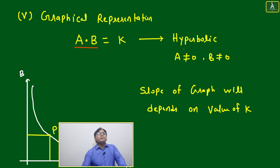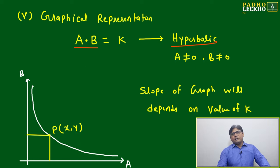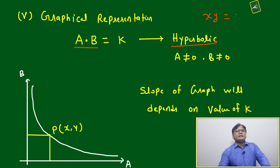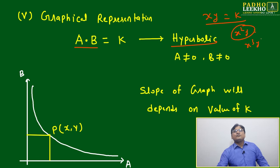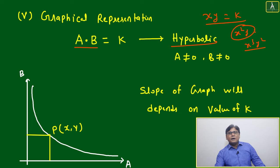Now, graphical representation: A·B equals constant. We know it is a hyperbolic graph. If XY is constant, then this will be a hyperbola. Different types of hyperbola can be X²Y - this is also hyperbola, X³Y² - this is also hyperbola. But the basic format, the most basic format, is XY = K. This is a hyperbola.